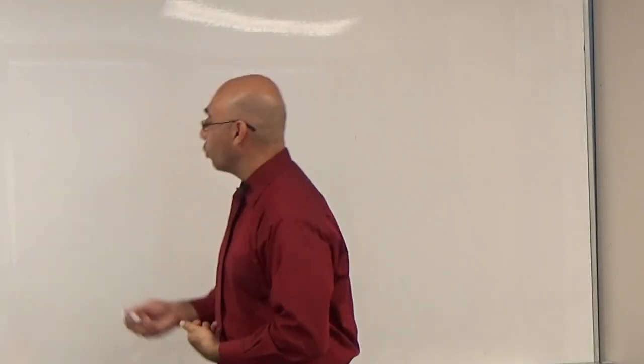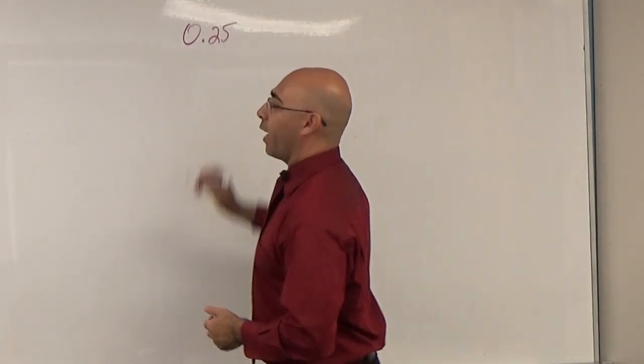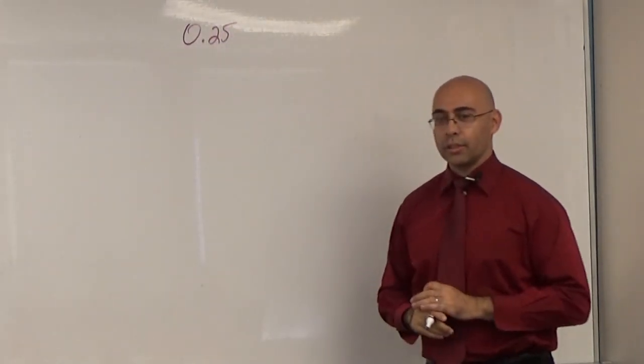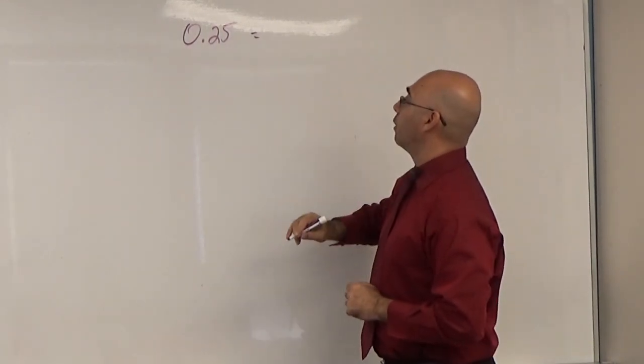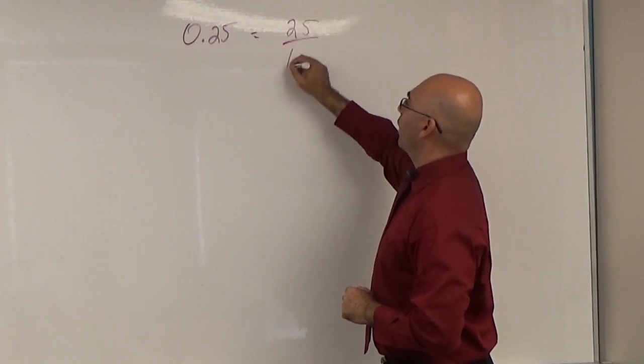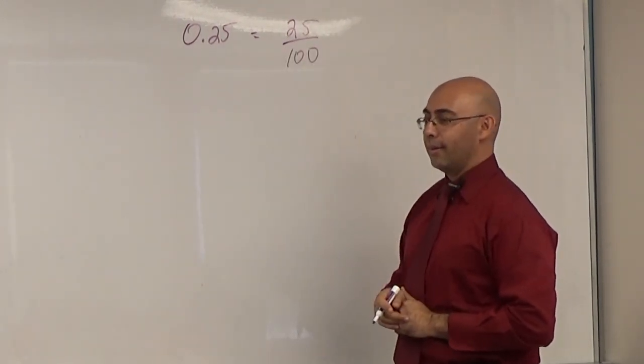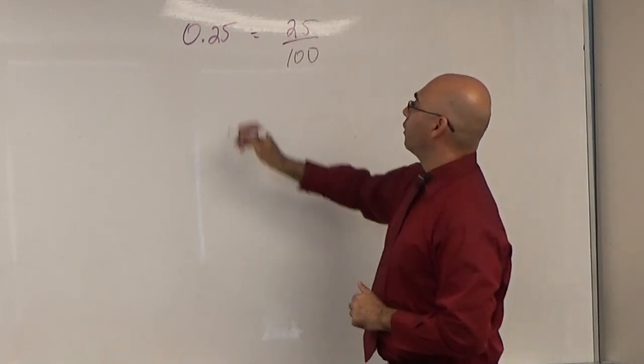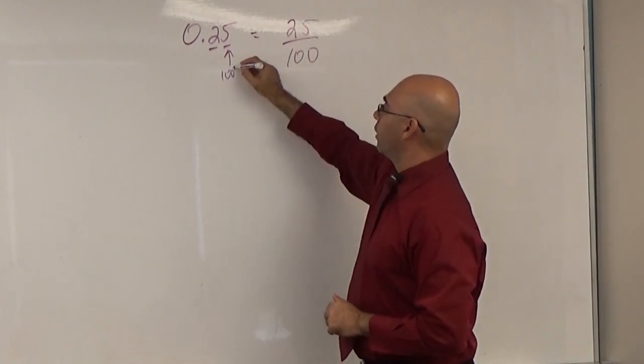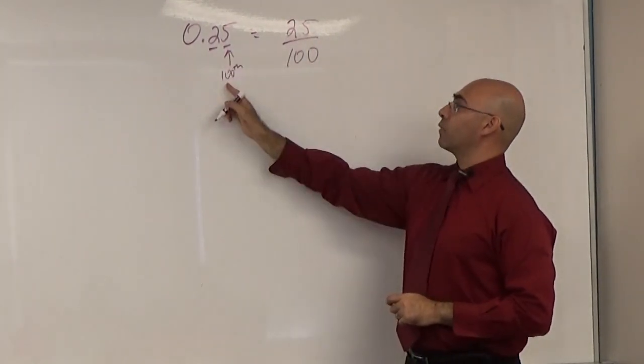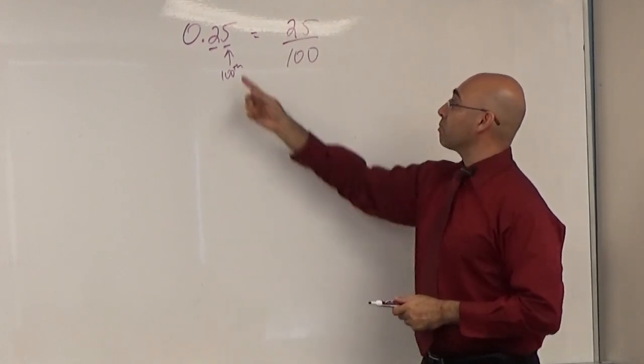What if I had 0.25? How do I write that as a fraction? Wait a second, how'd you get 100? I've been getting tens. Yeah, you got two places. That last number's in the hundredths place, isn't it? So whatever the last place value is, that's my denominator.